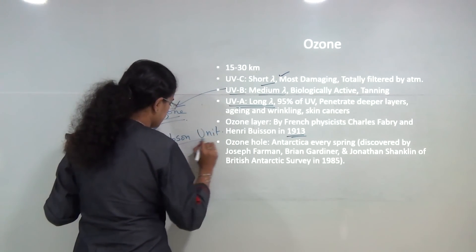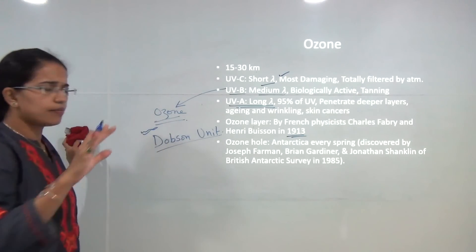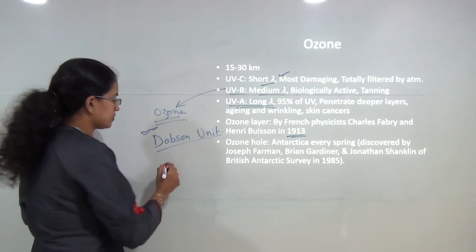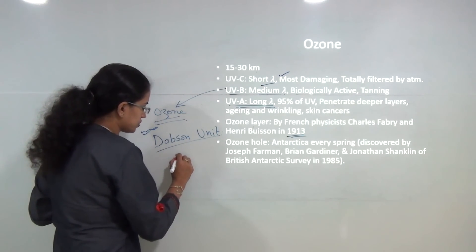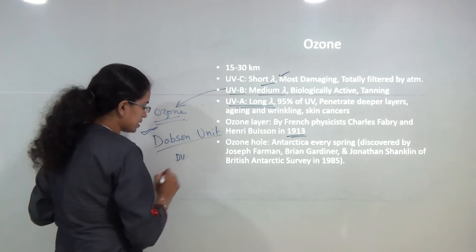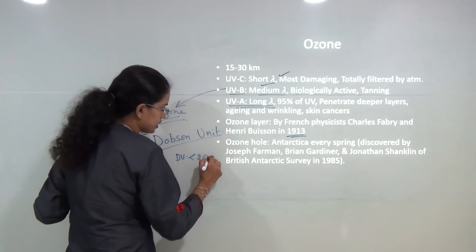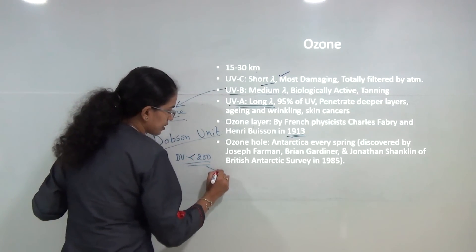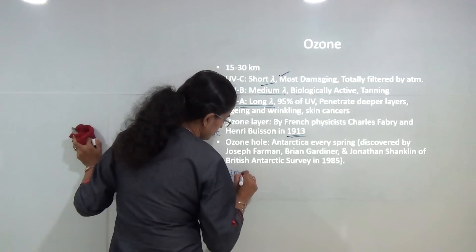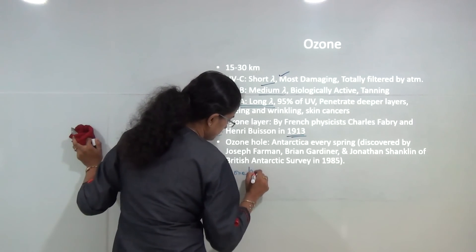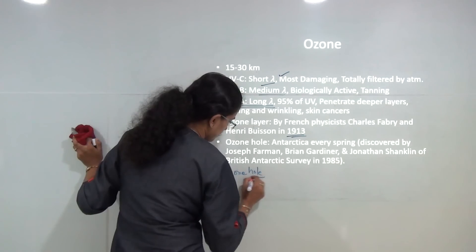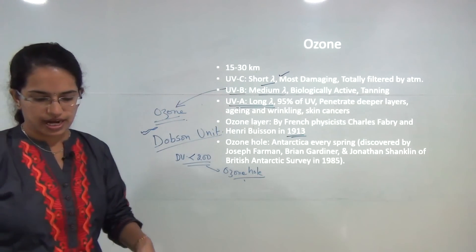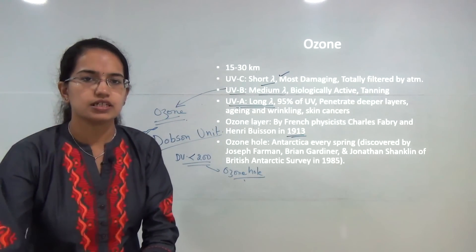If the amount of Dobson units, called DU, is less than 200, that means it is a region of ozone hole. The Dobson unit is a standardized measure to understand the amount of ozone present in the atmosphere.